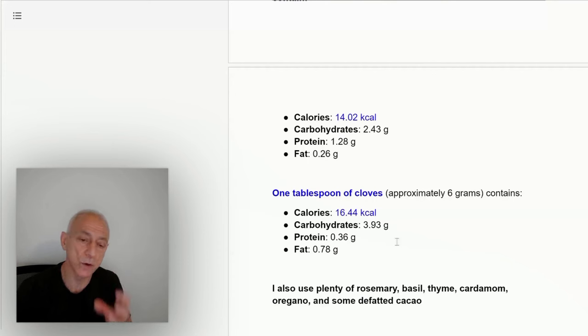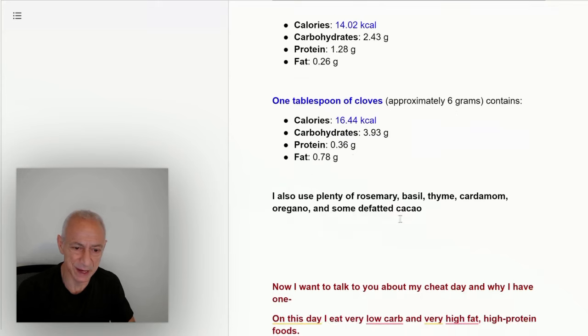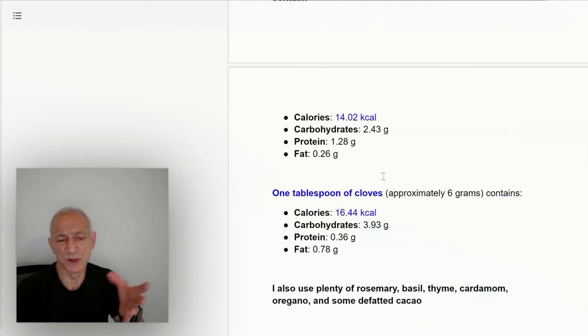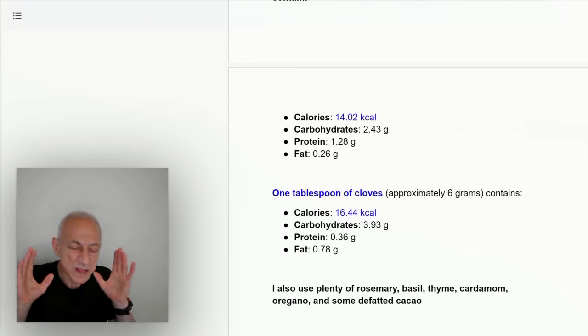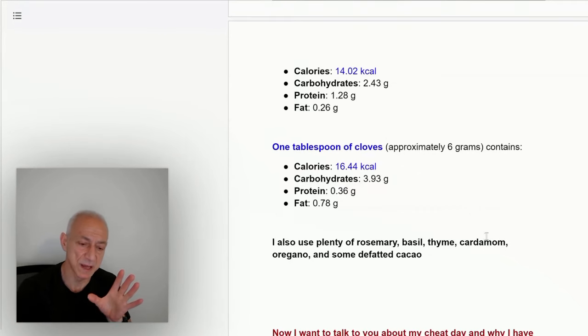A tablespoon of cloves—cloves are so healthy for you. Remember, you love your calories. I left this out—I use plenty of rosemary, basil, thyme, cardamom, oregano, and like I mentioned earlier, defatted cacao. Remember, all this adds up to another about 100, 150 calories. I don't know. So all together, I eat about 1,800 or 1,900, maybe near 2,000 calories a day.